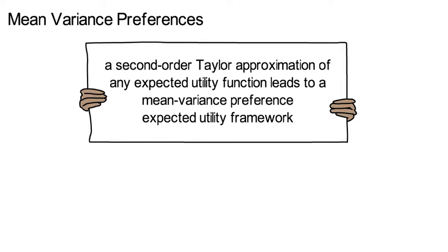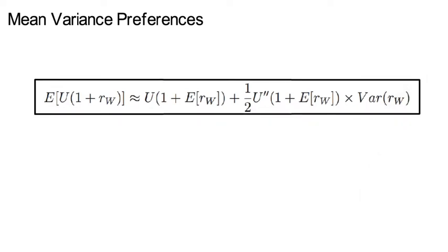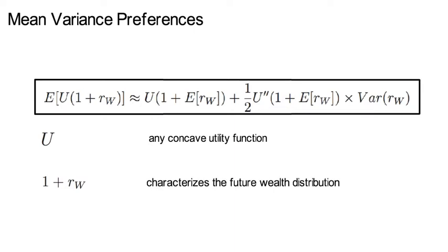So Markowitz and Levy show the following. Here u can be any concave utility function. 1 plus rw characterizes the future wealth distribution with rw being the return on wealth. Notice, as the utility function is concave, u'' is negative.